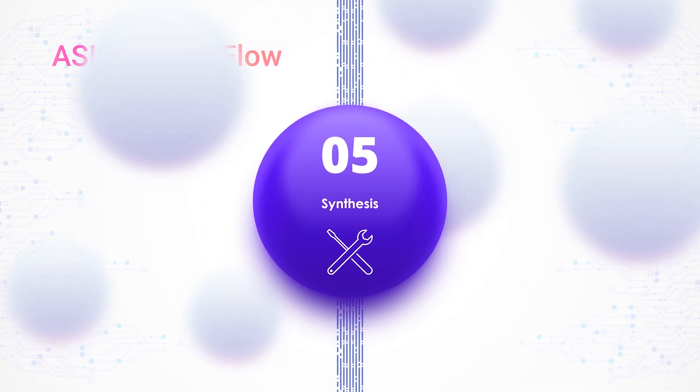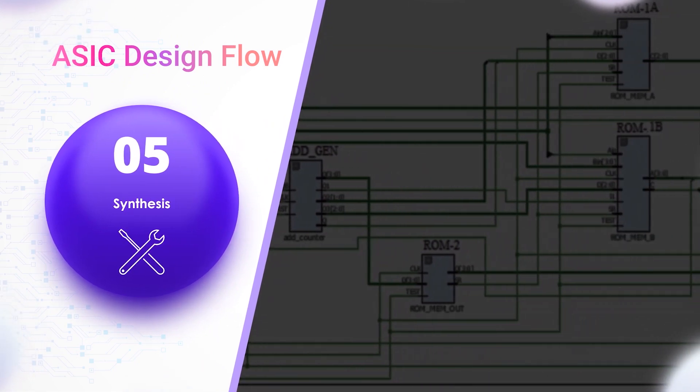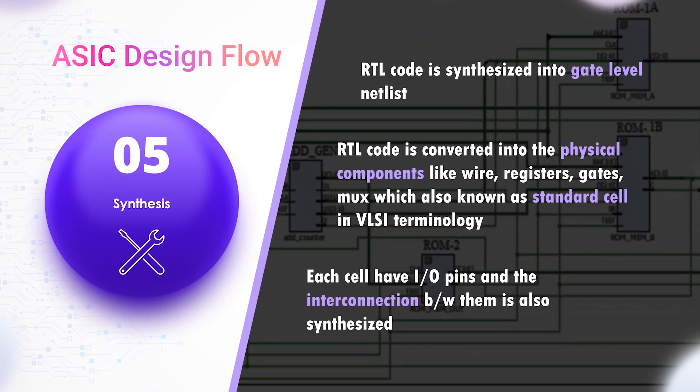Synthesis: In this step, the RTL code is synthesized into a gate-level netlist. This means the RTL code is converted into physical components like wires, registers, gates, and muxes — also known as standard cells in VLSI terminology. Each cell has input/output pins, and the interconnections between them are also synthesized.